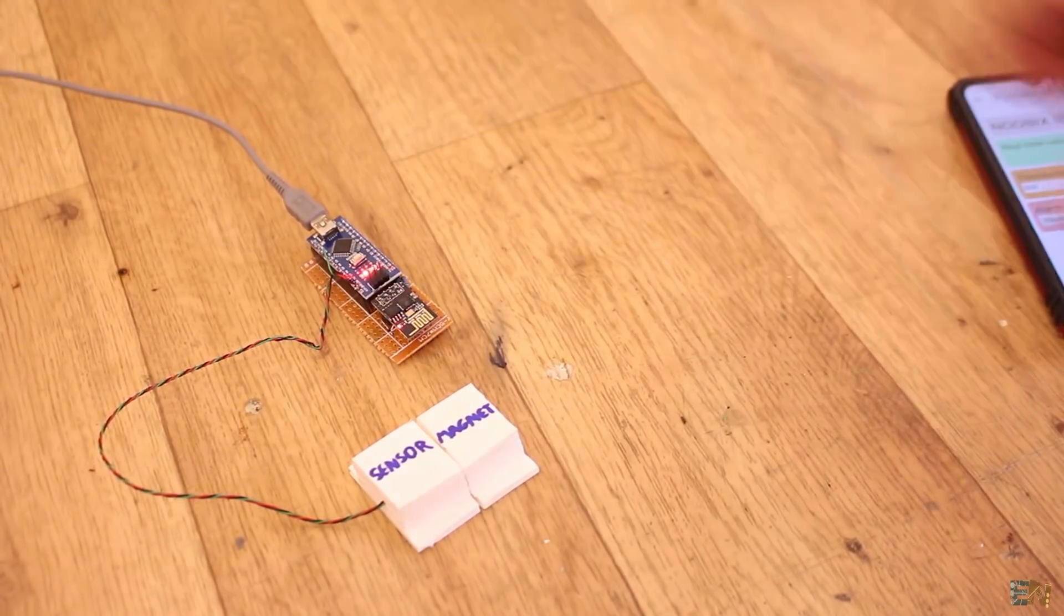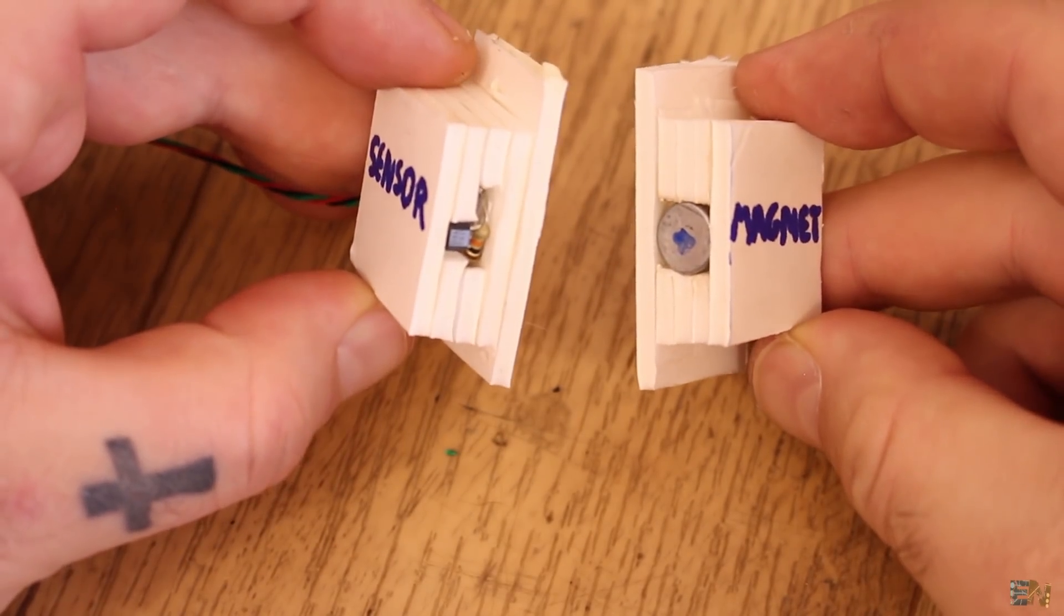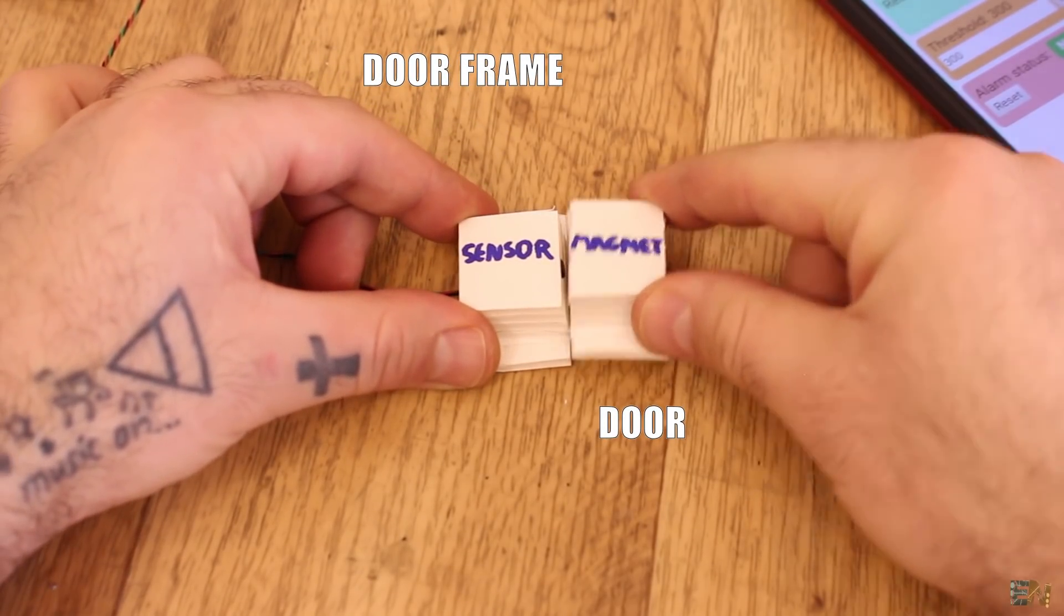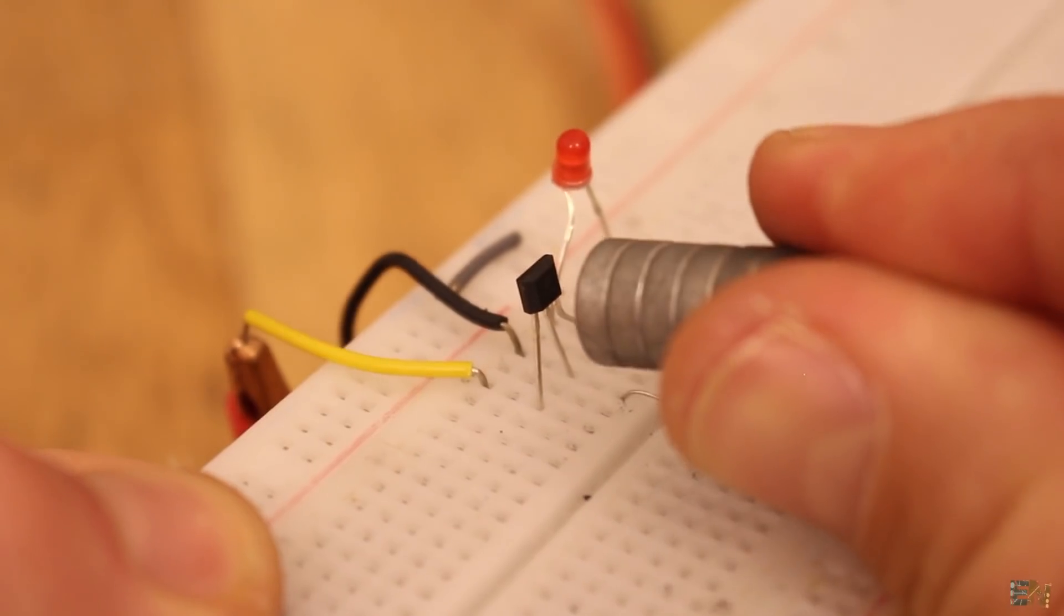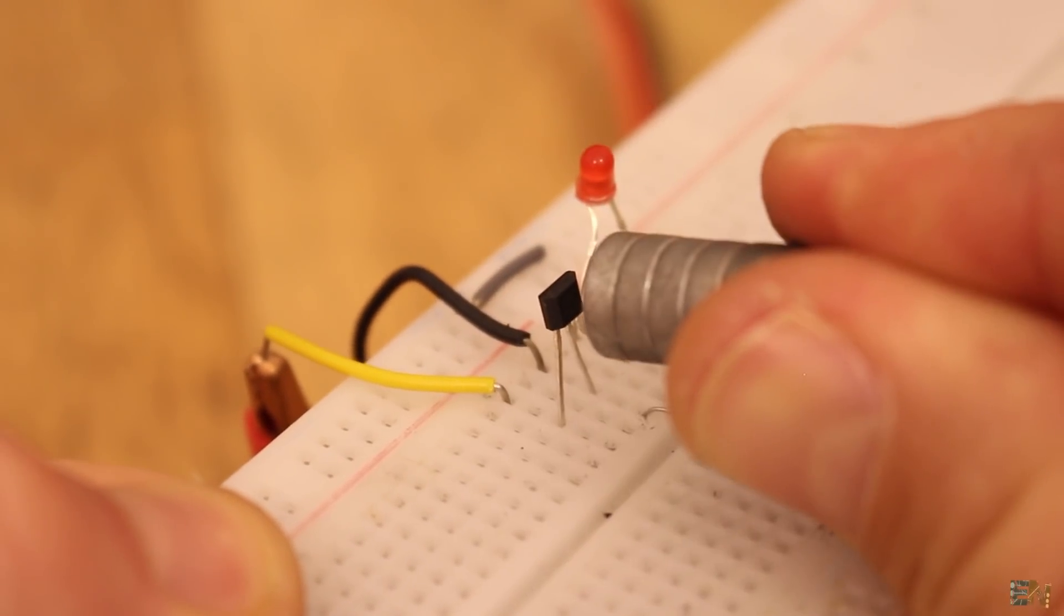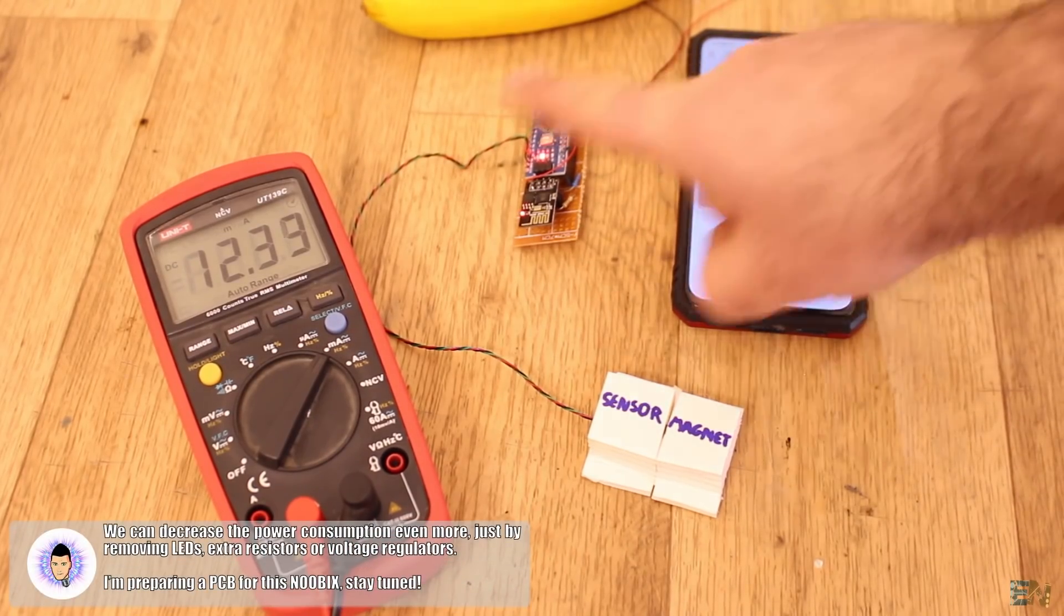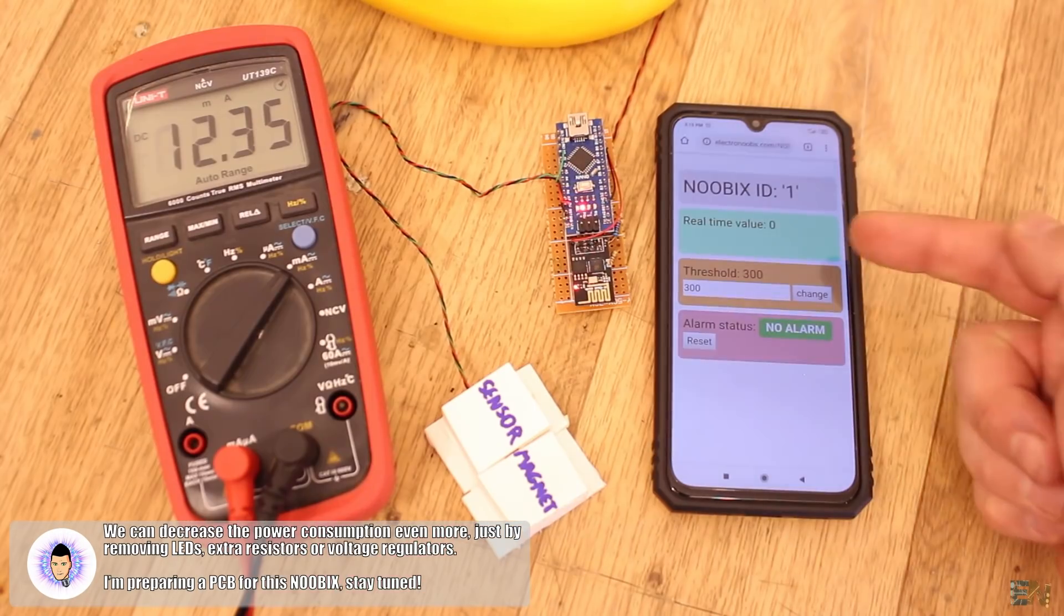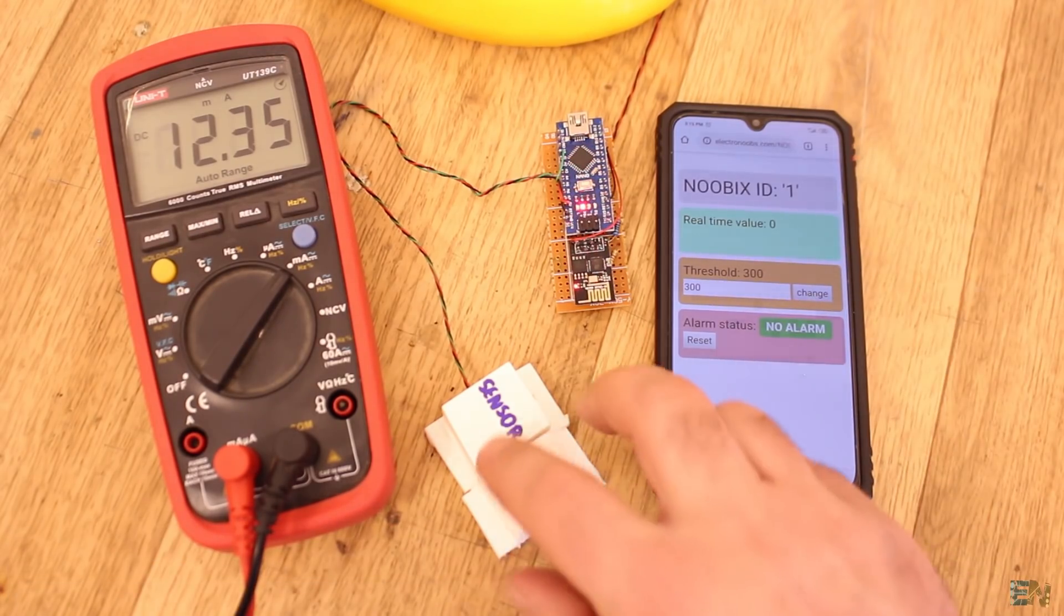So let's see another example with the magnet detector. Here I have a hall sensor and on the other side I have a magnet. One part should go on the door and the other on the door frame. In this way, when I separate the parts, I get a high output. Right now the Arduino and ESP are in deep sleep mode, so the power consumption is very low with a current of only 12 mA. Also on the website, the real-time value is 0 and no alarm was triggered.